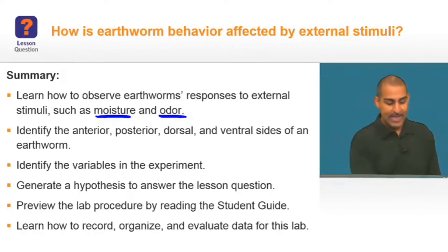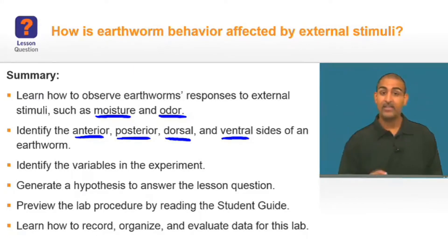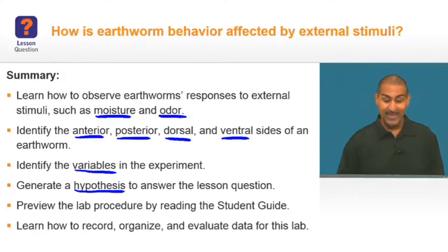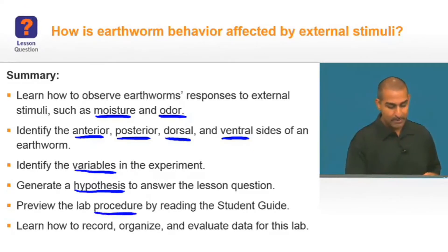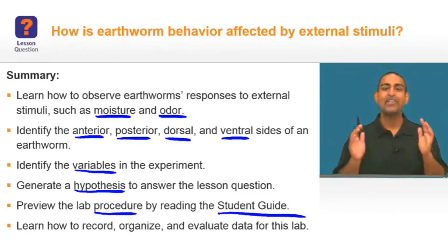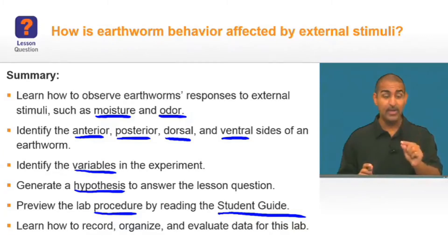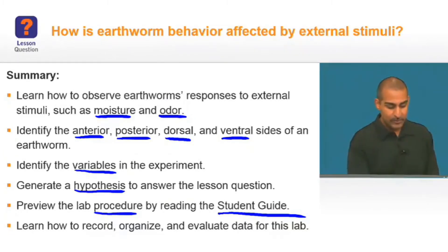Students will also identify the anterior, posterior, dorsal, and ventral sides of an earthworm, identify the variables in the experiment, and generate a hypothesis to answer the lesson question. The virtual labs are engaging and interactive, requiring students to complete the steps as though they were doing them with real materials in a lab setting. All labs begin with an explanation of the objective so students have a clear understanding of the expected outcome.